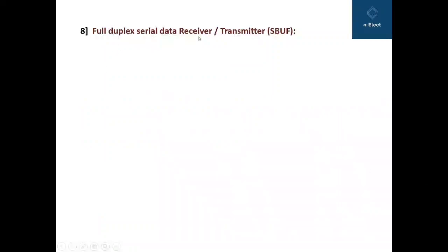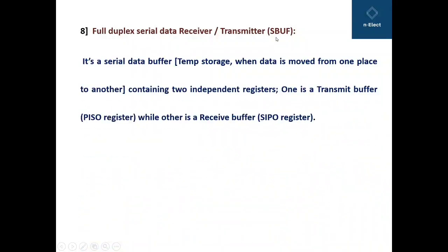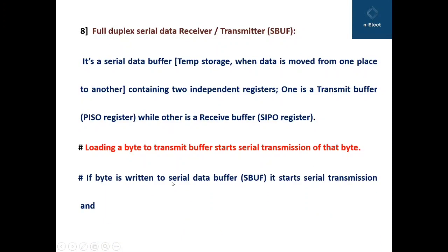Full duplex serial data receiver or transmitter, that is SBUF it is called. It is a serial data buffer which holds the data temporarily, actually the temporary storage it is when data is moved from one place to another. Containing two independent registers, one is a transmit buffer which is PISO register that is parallel in serial out register while other is a receive buffer that is serial in parallel out register. Loading a byte to transmit buffer starts serial transmission of that byte. If byte is written to the serial data buffer, it starts serial transmission and if SBUF is read, it reads received serial data. So this is how the data transmission takes place through this serial buffer.